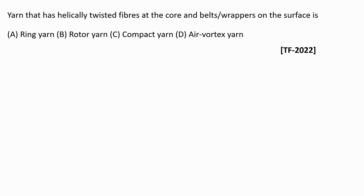Next question: which yarn has helically twisted fibers at the core and wrappers on the surface? Options are ring yarn, rotor yarn, compact yarn, and air vortex yarn. In rotor yarn, the helically twisted fibers are present at the core with wrappers on the surface. Option B, rotor yarn, is the right answer.